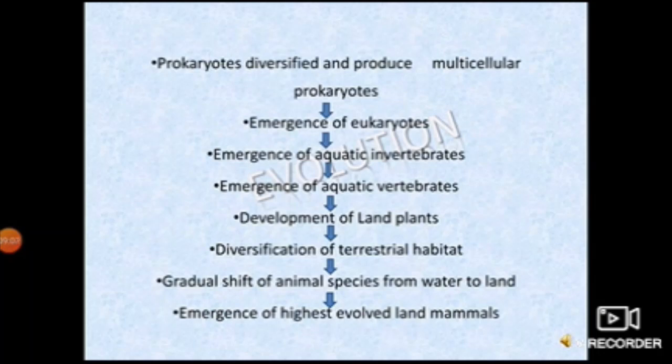Next, prokaryotes diversified into multi-cellular forms, and then eukaryotes emerged — eukaryotes meaning organisms with a full-fledged nucleus. Aquatic invertebrates evolved, followed by aquatic vertebrates like fish. Then land plants evolved.